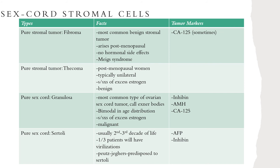Among pure stromal tumors, fibromas are most commonly benign, accounting for 4 percent of all cases, and typically present in postmenopausal women. There are no hormonal side effects — no signs of excess estrogen or androgen. These patients may present with Meigs syndrome, which is a triad of benign ovarian tumor with ascites and pleural effusion, and it typically resolves after removal of the fibroma. Sometimes an elevation in CA-125 can be seen.